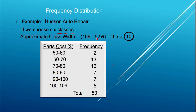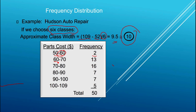Once I've picked six classes, I figure out the class width by taking the maximum cost of auto parts, which is 109, minus the minimum, which is 52, divided by 6. That gives a class width of 9.5. Using a decimal is inconvenient, so I round up to 10 and use a class width of 10. I start my frequency distribution at 50, capturing repairs costing between $50 and $59.99, and if it's $60, it spills into the next class, which goes from $60 to $69.99.